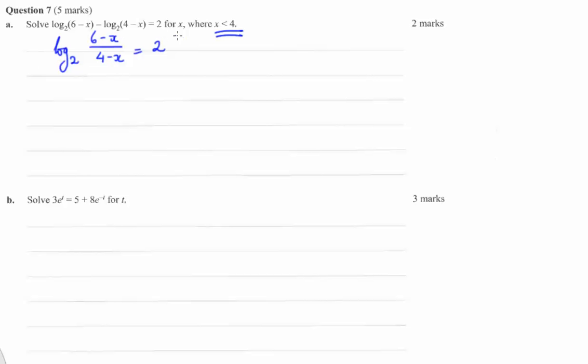Let's raise both sides to the power of 2. We get (6 minus x) on (4 minus x) equals 4. Let's multiply both sides by (4 minus x) gives us 6 minus x equals 16 minus 4x. Add 4x to both sides.